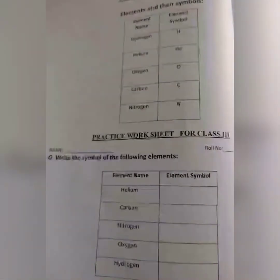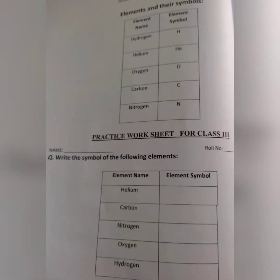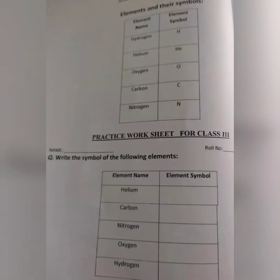And now a new topic: elements and their symbols. Before we start, we will know about what are elements. All metals are made up of elements, and scientists use the shortest name for elements, which we denote by symbols.